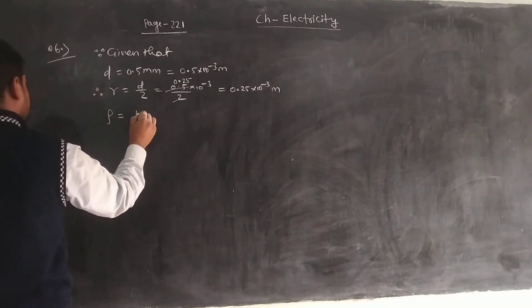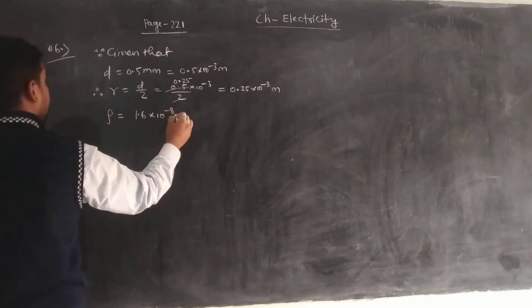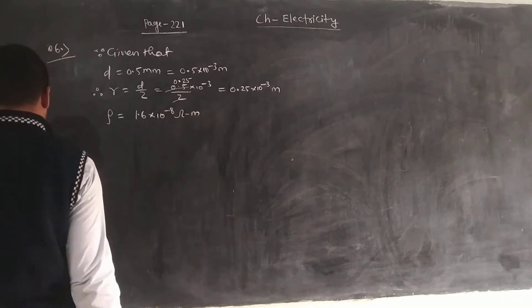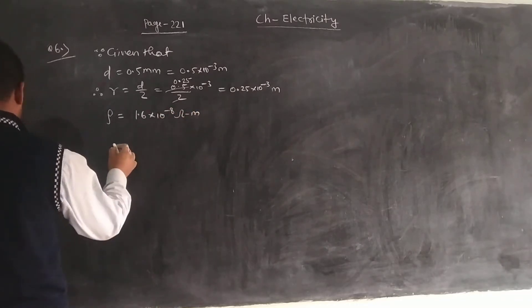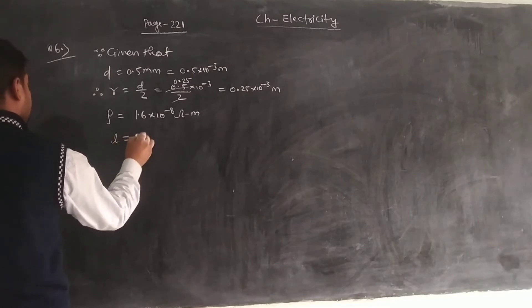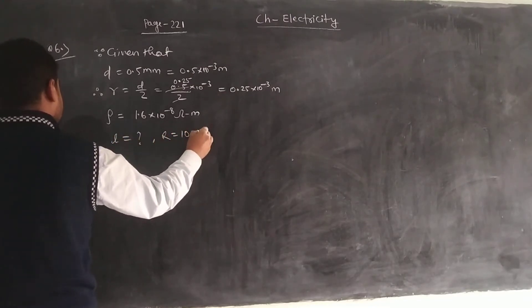From previous examples, the resistivity will be 1.6 into 10 to the power minus 8 ohm meter. What will be the length of this wire to make a resistance of 10 ohm?